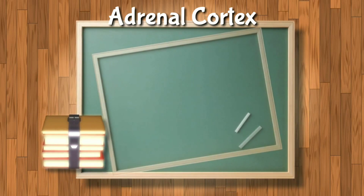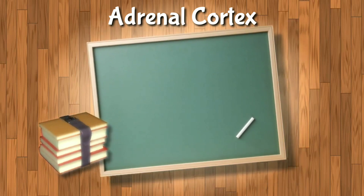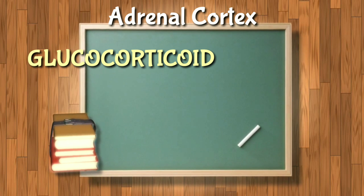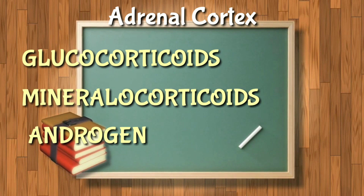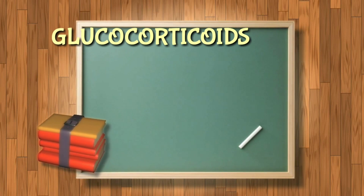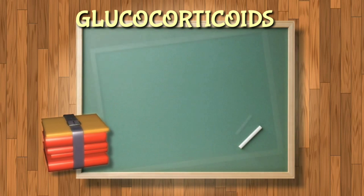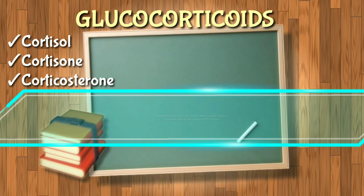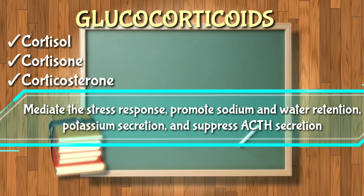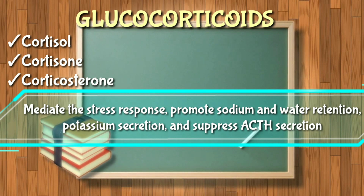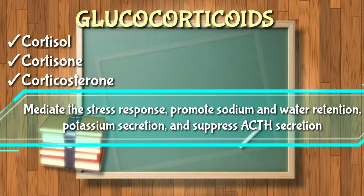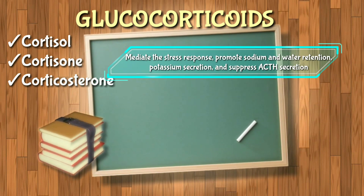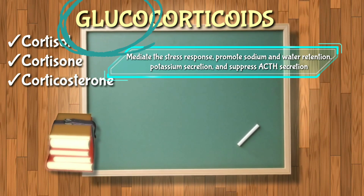To make it easier, the adrenal cortex secretes three major hormones: the glucocorticoids, mineralocorticoids, and the sex hormone. The glucocorticoids include cortisol, cortisone, and corticosterone, which mediate the stress response, promote sodium and water retention, potassium secretion, and suppress ACTH secretion.